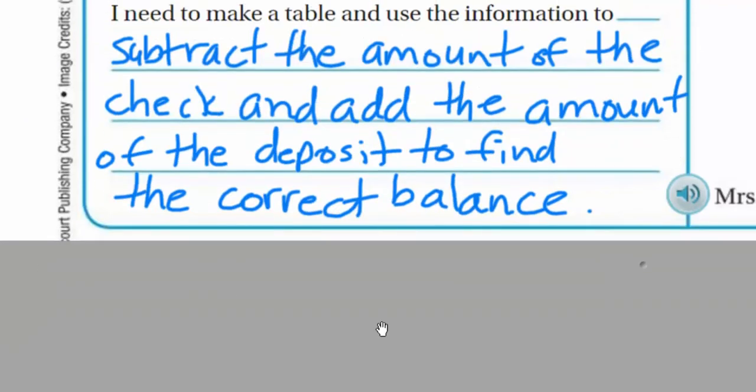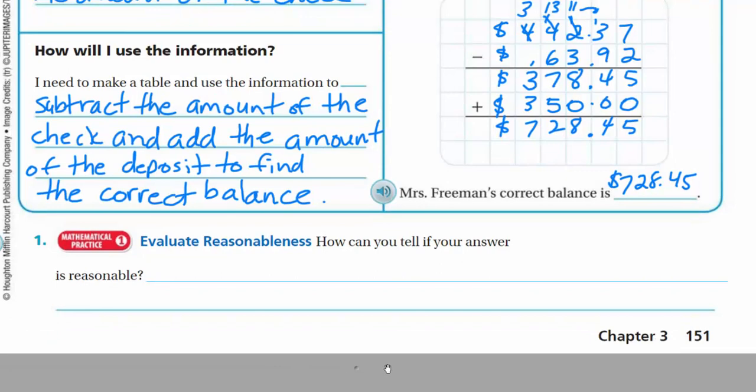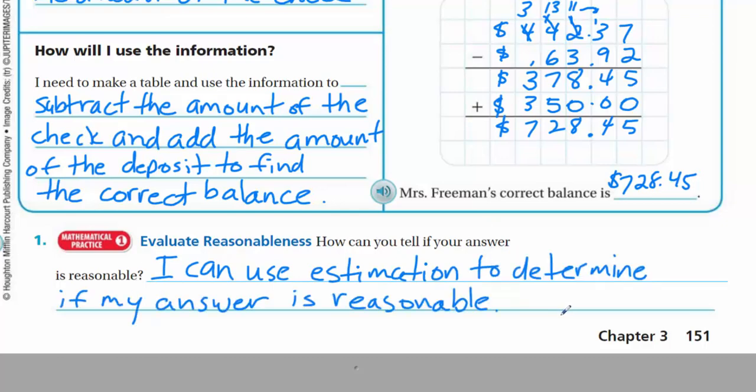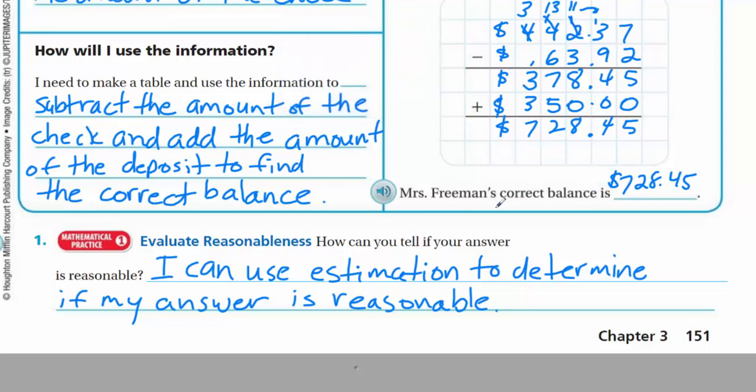There we go. Nice. I guess we're moving on to the next page. Oh, we still have something else down here. So evaluate reasonableness. How can you tell if your answer is reasonable? Well, you do numbers. If you do a quick estimate, that might be a way. I could use estimation to determine if my answer is reasonable. Definitely one way. That's what I would write. I can use estimation to determine if my answer is reasonable. So an estimation, just best guess. You know, you're looking at these numbers, you get an idea. This number was so close that I think if you had made an estimate, I think that we would have known that Mrs. Freeman had made a mistake. Here we had to find out the exact answer, and that's what we needed to do.